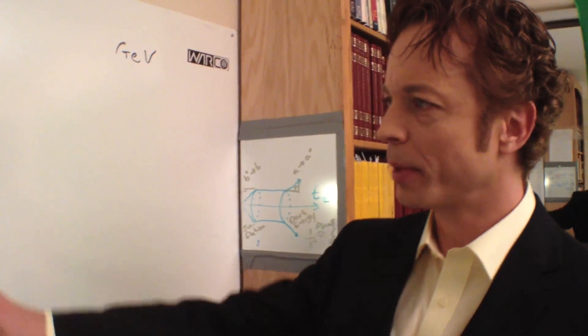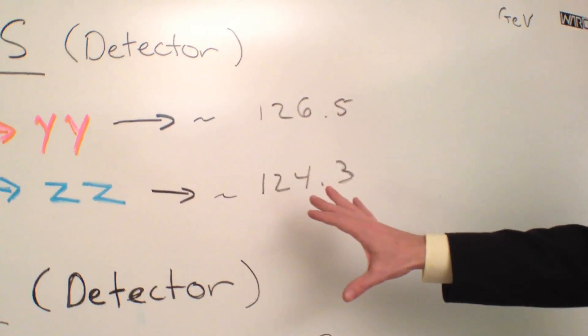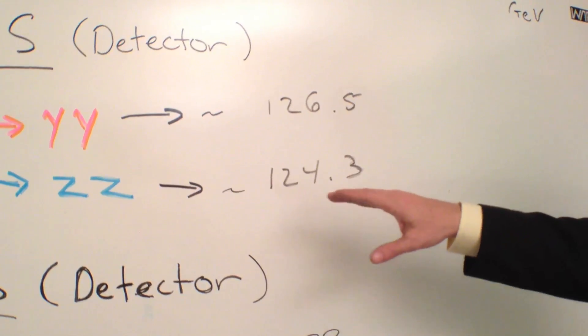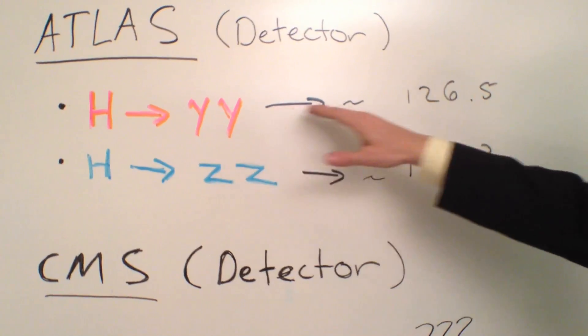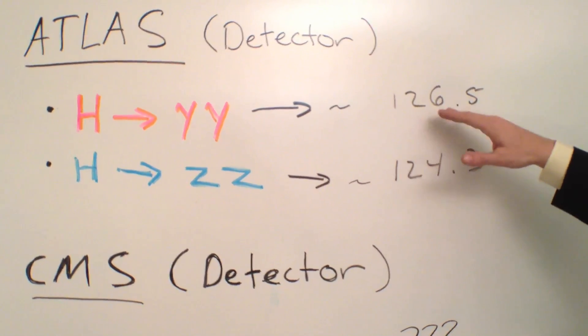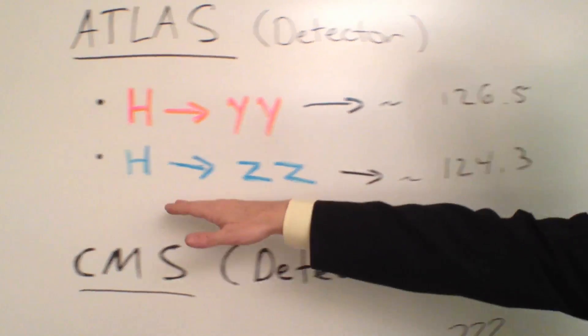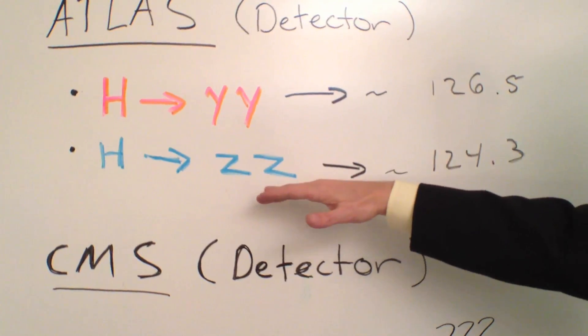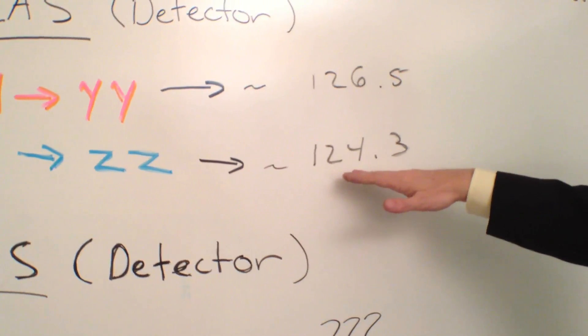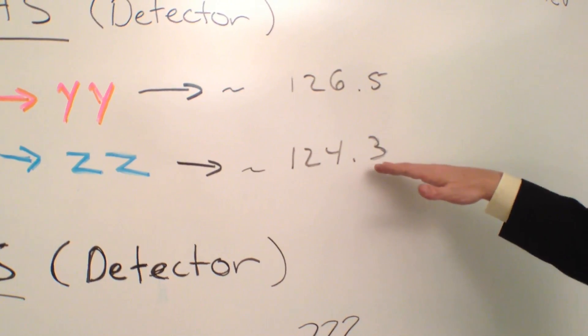The Higgs paradox information is still showing up in the Higgs data, where the Higgs to gamma-gamma mass is approximately 126.5 GeV, and the Higgs to ZZ channel mass is approximately 124.3 GeV.